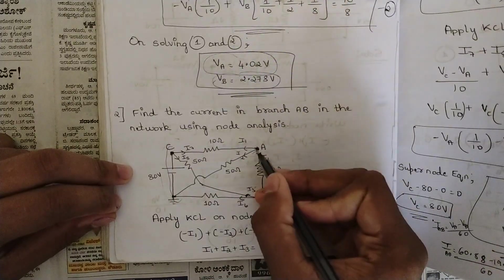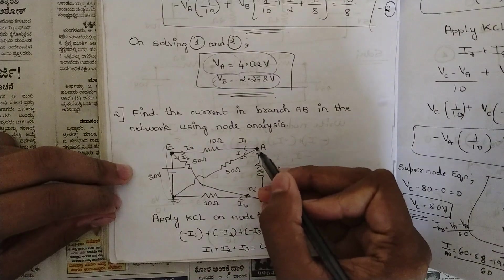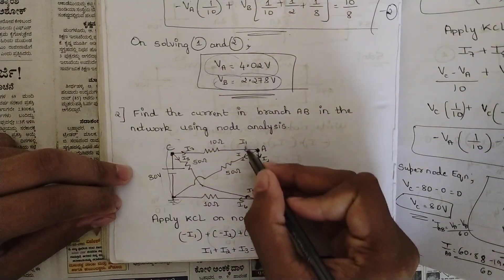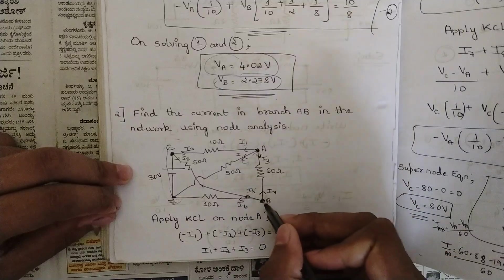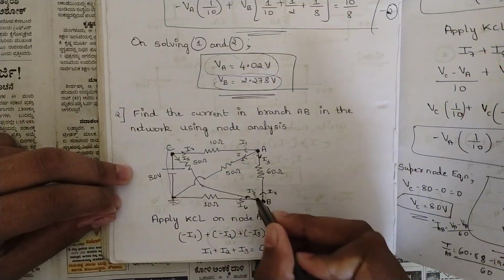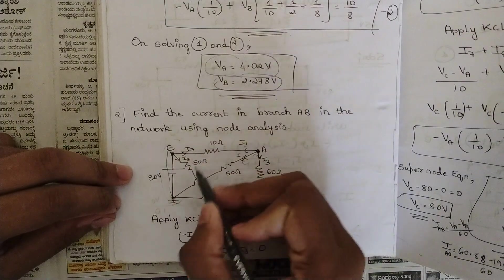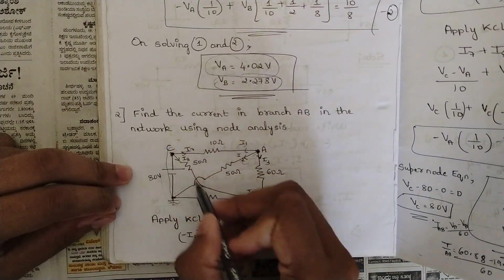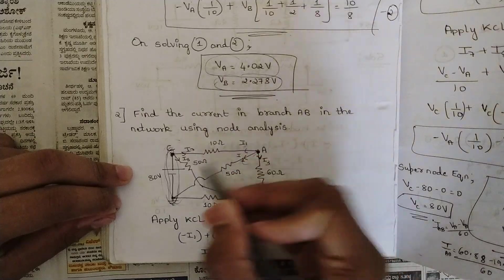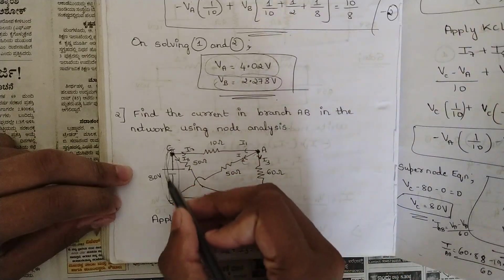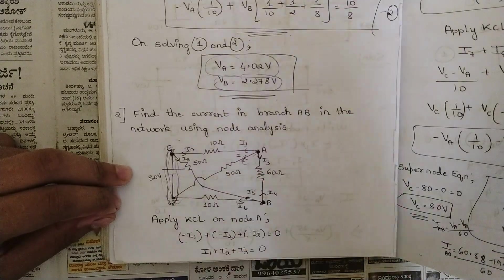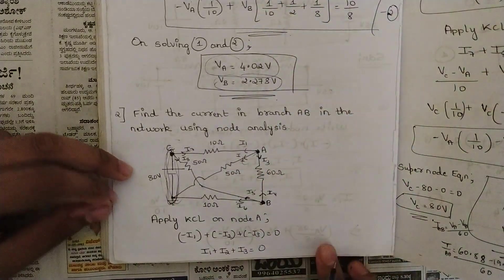For node A, mark the three branch currents — since three branches meet here: I1, I2, I3. Similarly for node B, three branches meet: I4, I5, I6. For node C, we also have three branches, but one has no resistor, so it's not a valid branch — these two branches meet at node C as I7 and I8.